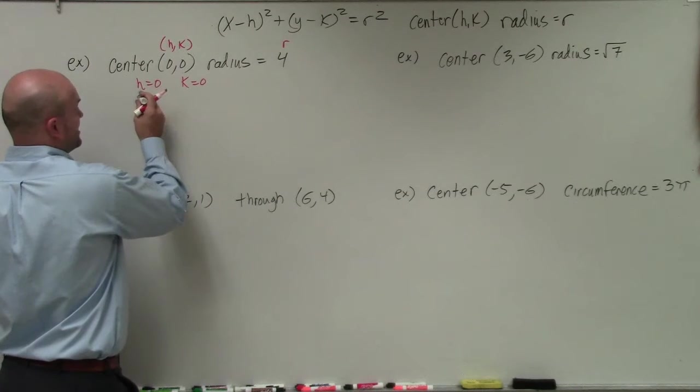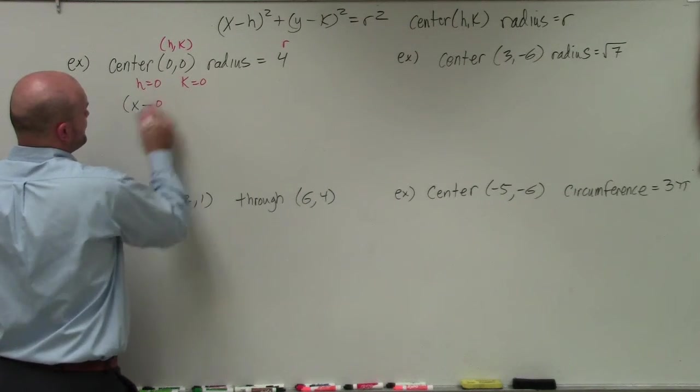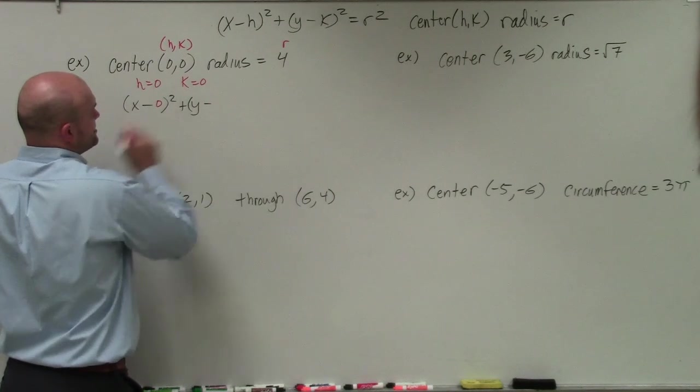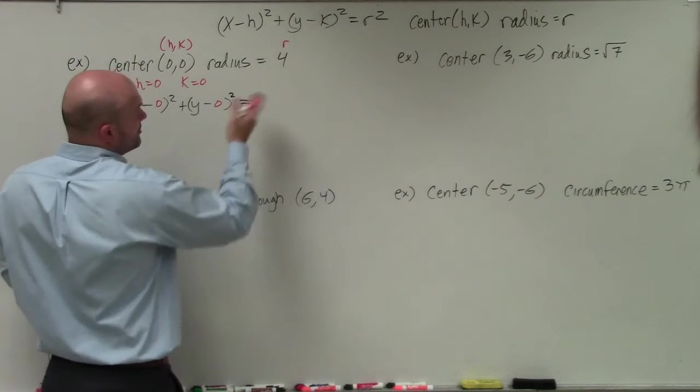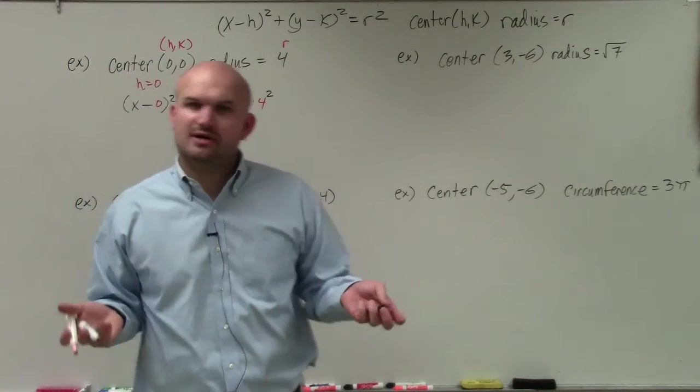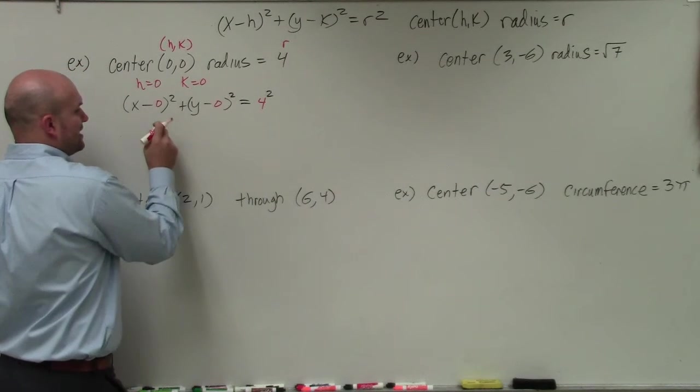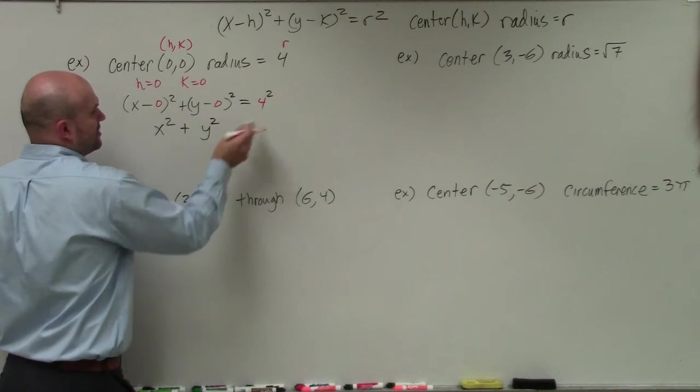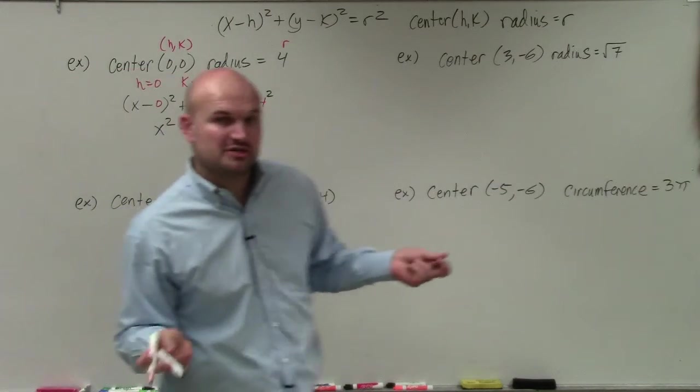So we're not given any x or y. So I'm going to have x minus h, which is 0, squared, plus y minus k, which is 0, squared, equals r, which is given as 4, squared. And now we just go ahead and simplify it. x minus 0 is just x squared plus y minus 0 is y squared equals 4 squared, which is equal to 16. And there you go. That's our equation of our circle.